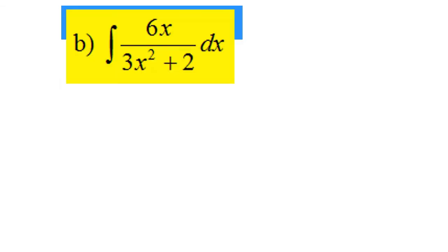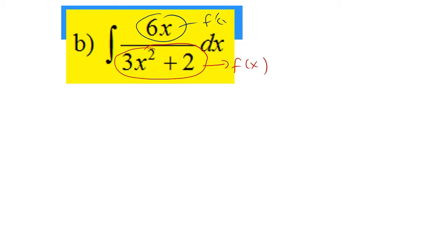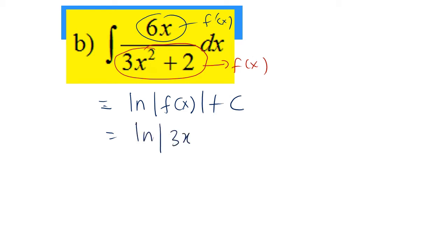Next, for part B, when we integrate 6x over 3x² plus 2 dx, at the denominator side we assume 3x² plus 2 as f(x). When we differentiate 3x² plus 2, we will have 6x, so this is f'(x). When we integrate f'(x) over f(x), we get ln|f(x)| plus c. Our f(x) is 3x² plus 2, so we write ln|3x² plus 2| plus c. Simple.